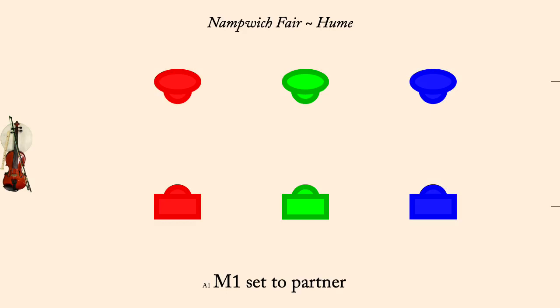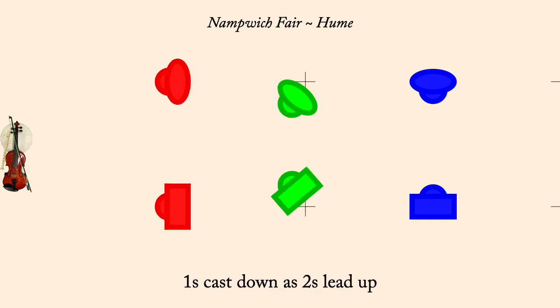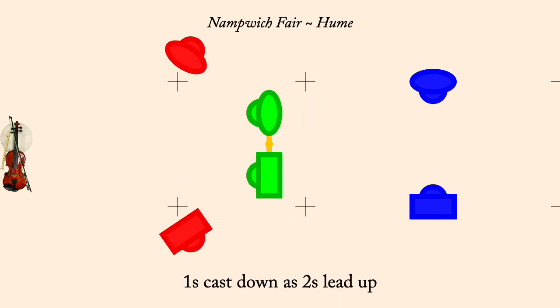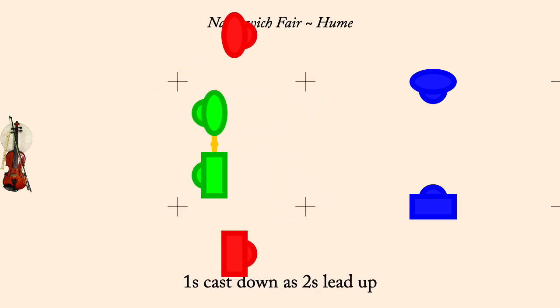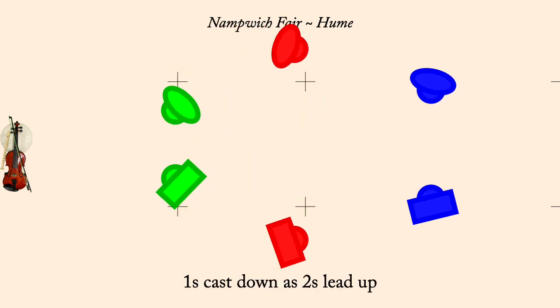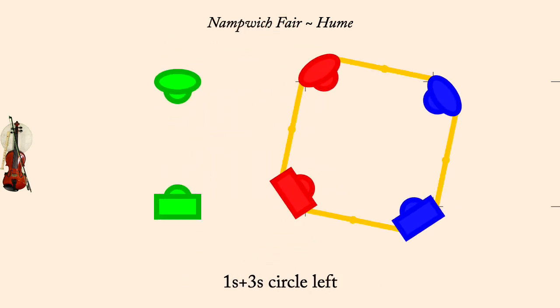Man one set. Ones cast down as twos lead up. Ones and threes circle left.